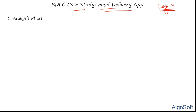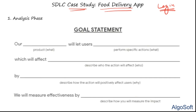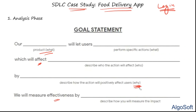A goal statement is a statement that answers all key questions before writing a layout. It covers: what your product is, what actions users can take, who the target audience is, what effects those actions will have, why you designed the product, and how you'll measure its effectiveness.